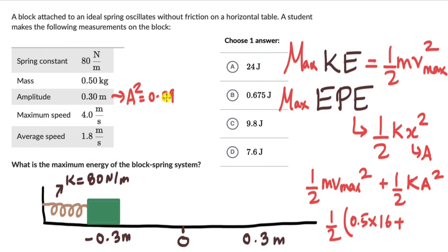And when you multiply 80 with 0.09 you get 7.2. So you are adding 7.2 here. 0.5 into 16 that is 8 and 8 plus 7.2 that is 15.2. Now you are dividing 15.2 with 2. So this comes out to be equal to 7.6 joules. And that is the last option, option D.